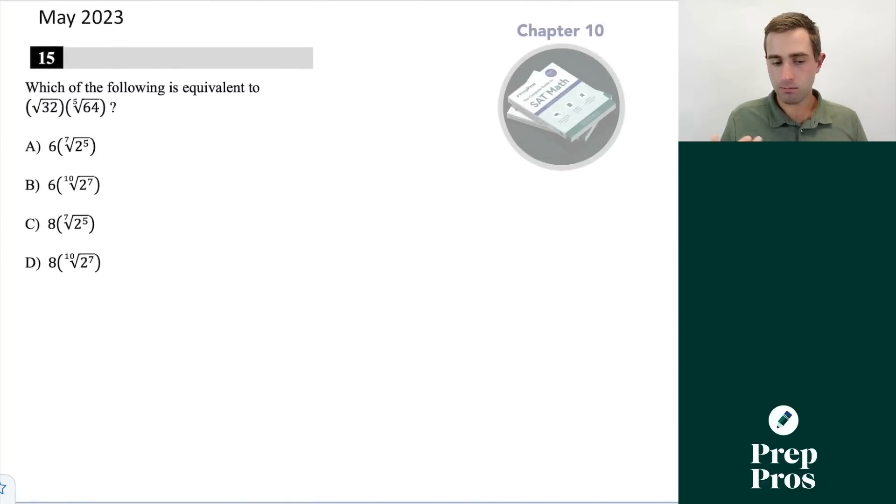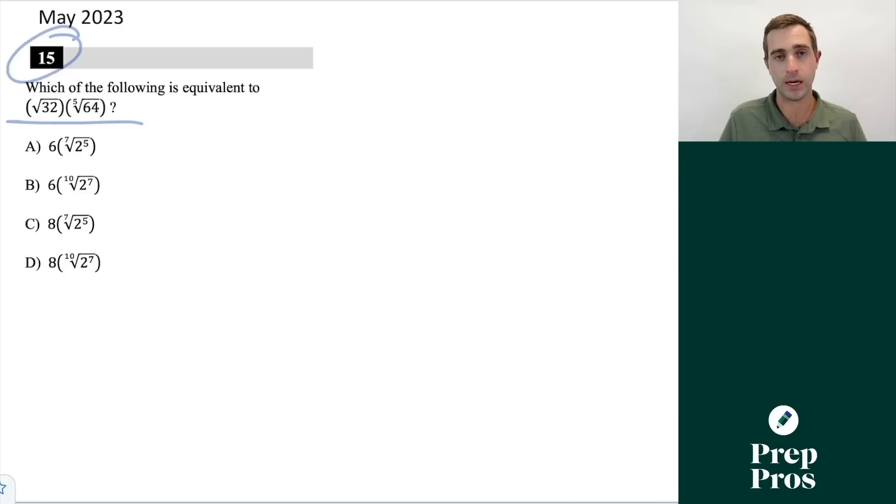Now, another really classic thing we see a ton of is exponent questions on both forms of the SAT. This is our paper-based version here. What we really want to think about is there's two consistent topics that show up for the most difficult exponent questions. This is fractional exponents and reducing your bases. The first thing that I look at for a question like this is I'm going to put these both in fractional form, but I want to start by getting my bases the same. So what I know is 32 is the same as 2 to the 5th, as my brain was taking a moment there, and 64 is the same as 2 to the 6th.